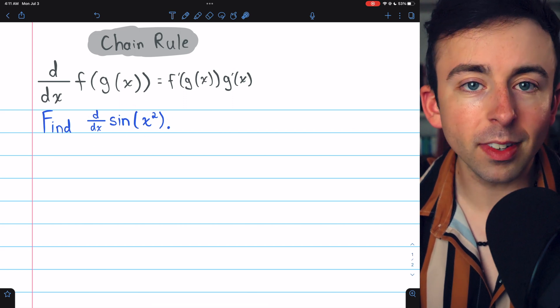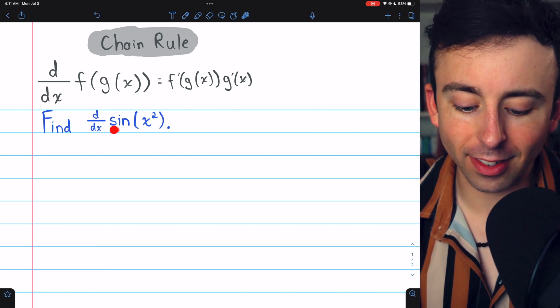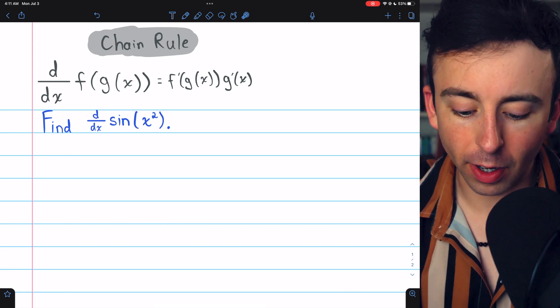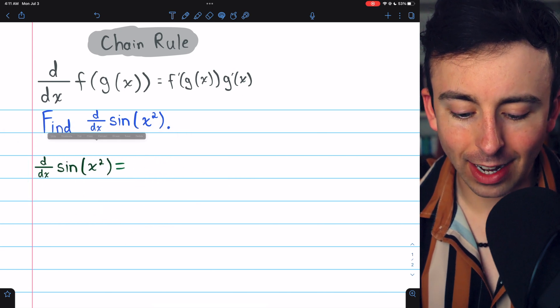Looking at this function, sine of x squared, f, the outside function, is sine, and g, the inside function, is x squared, so it should be pretty easy to take the derivative.